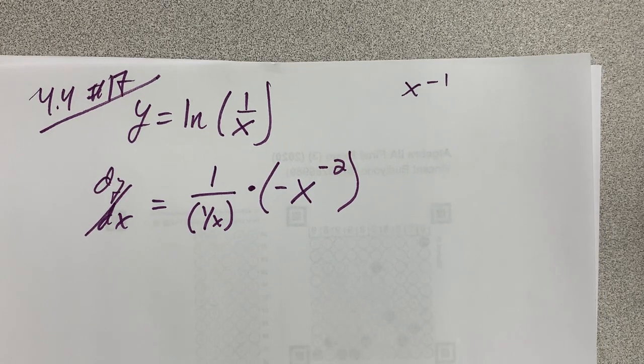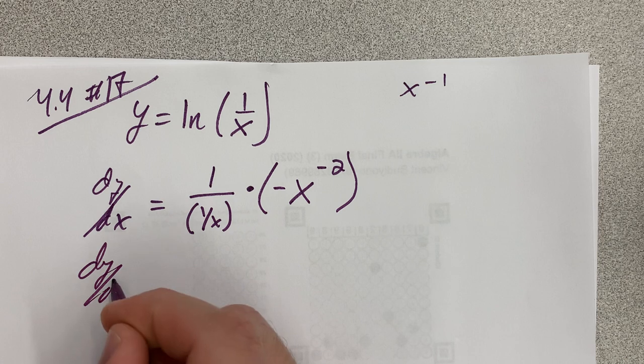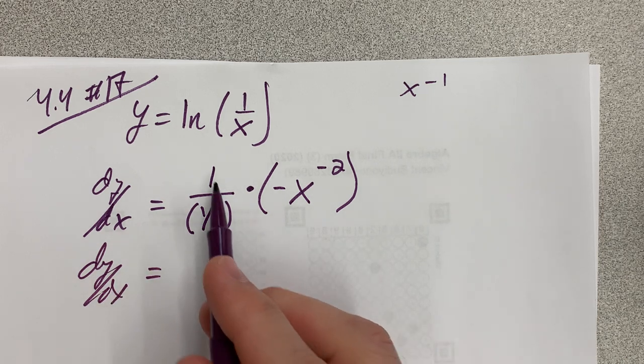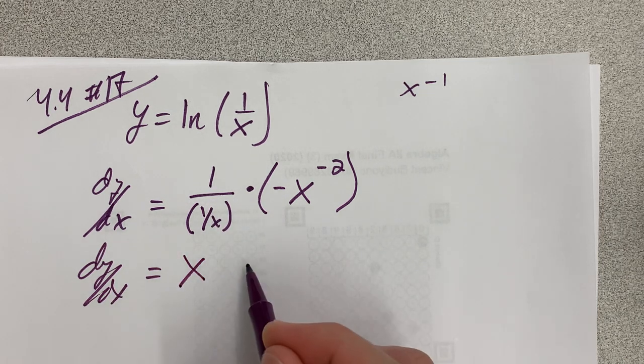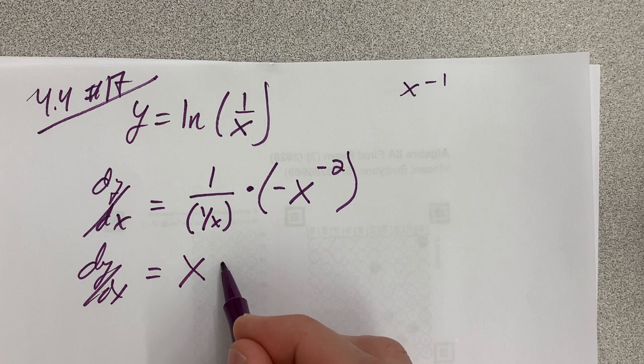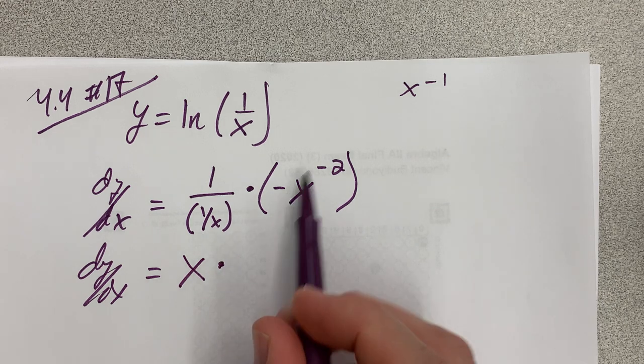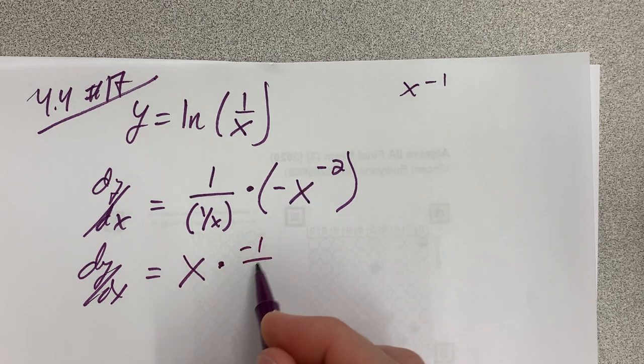So, are you good there, to that point? Yeah. Okay, so then 1 over 1 over x is x, and then this is going to be negative 1 over x squared.